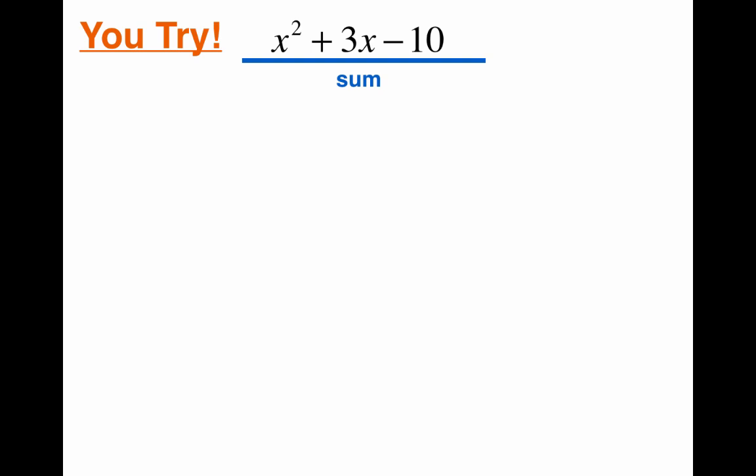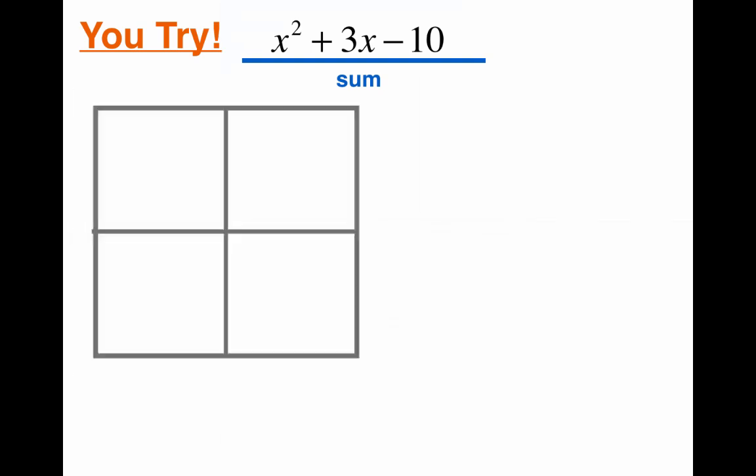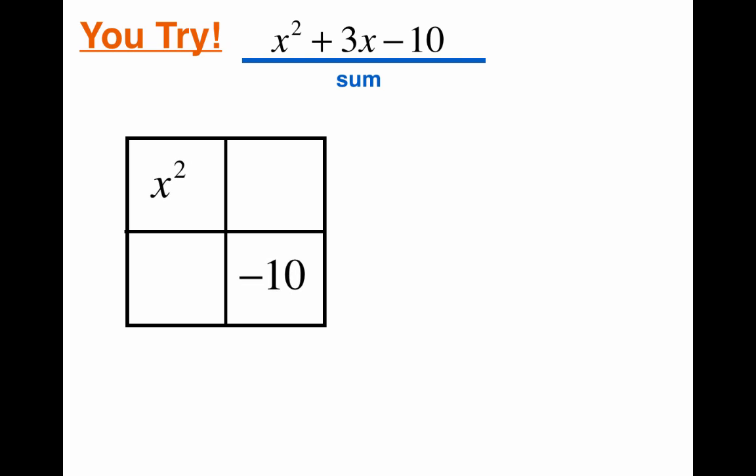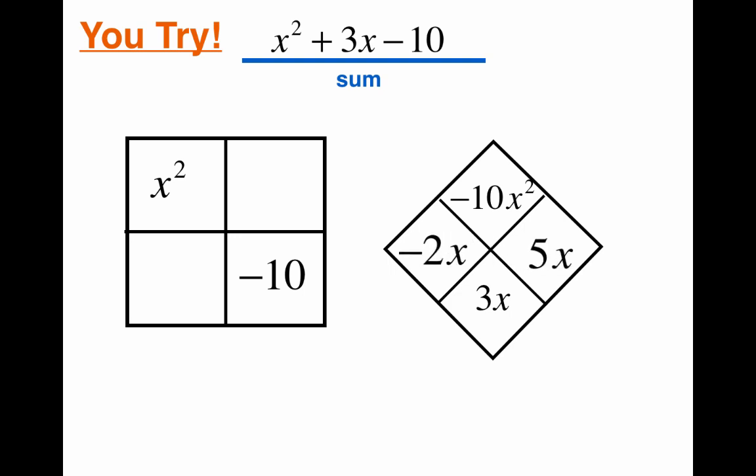All right, you ready to check your answer? Let's see how you're doing here. So here's the rectangle. It's got x squared negative 10 across from each other. Then we set up the diamond where you times it to negative 10x squared. 3x is our problem that we have to split up. So we've got to multiply to negative 10, but add to 3. So I'm thinking negative 2 times 5, negative 2x and 5x. Or you can do it backwards. You could put the 5x first and then the negative 2x. That part doesn't matter. And we're going to put that into our squares, into our corners on our generic rectangle.